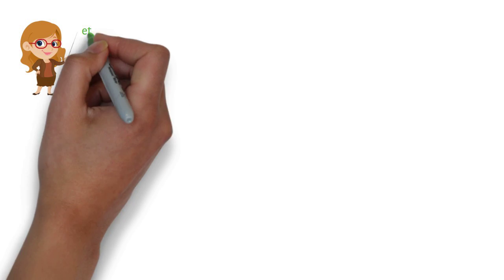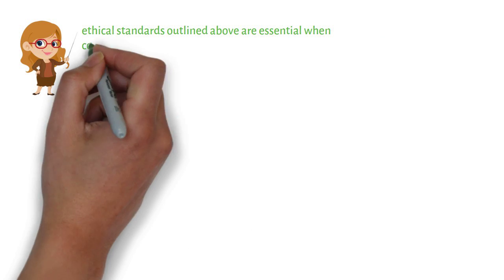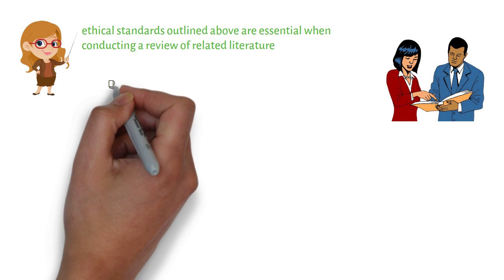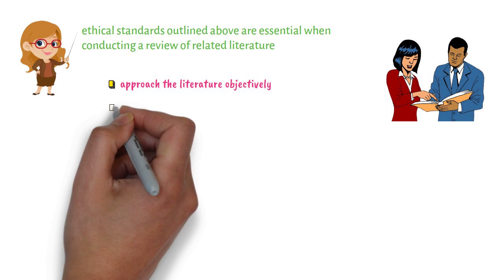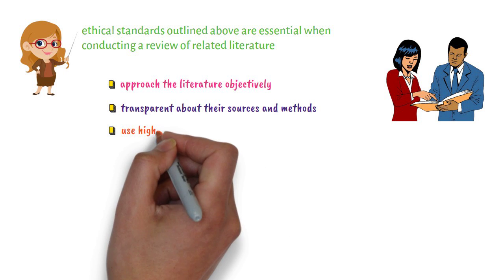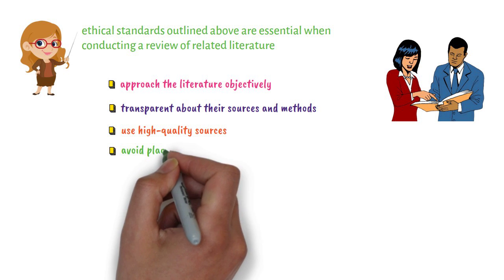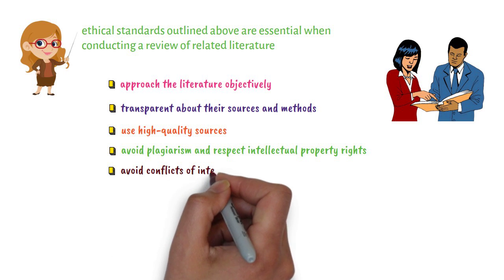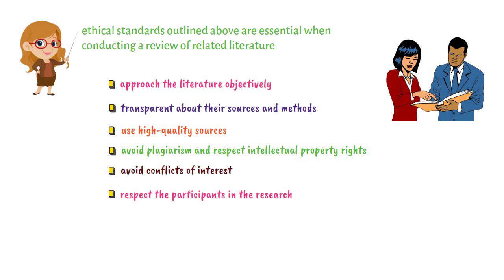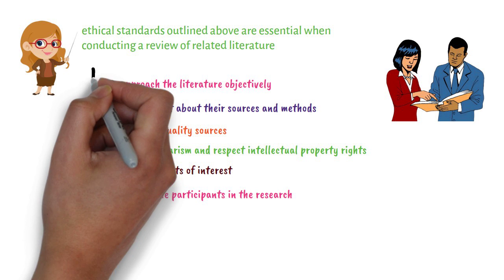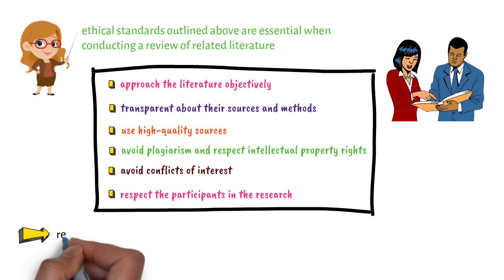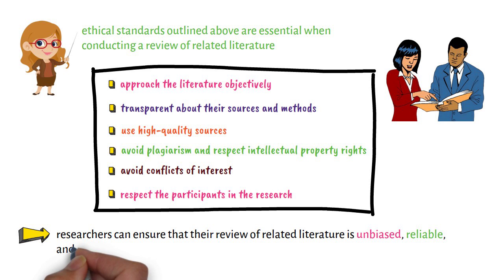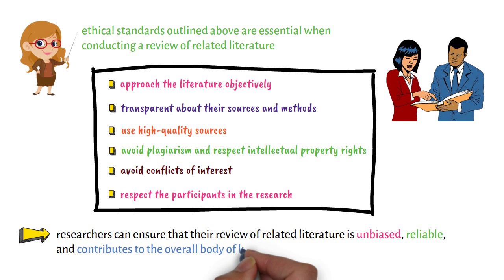In summary, the ethical standards outlined above are essential when conducting a review of related literature. Researchers must approach the literature objectively, be transparent about their sources and methods, use high-quality sources, avoid plagiarism and respect intellectual property rights, avoid conflicts of interest, and respect the participants in the research. By following these ethical standards, researchers can ensure that their review of related literature is unbiased, reliable, and contributes to the overall body of knowledge in their field.